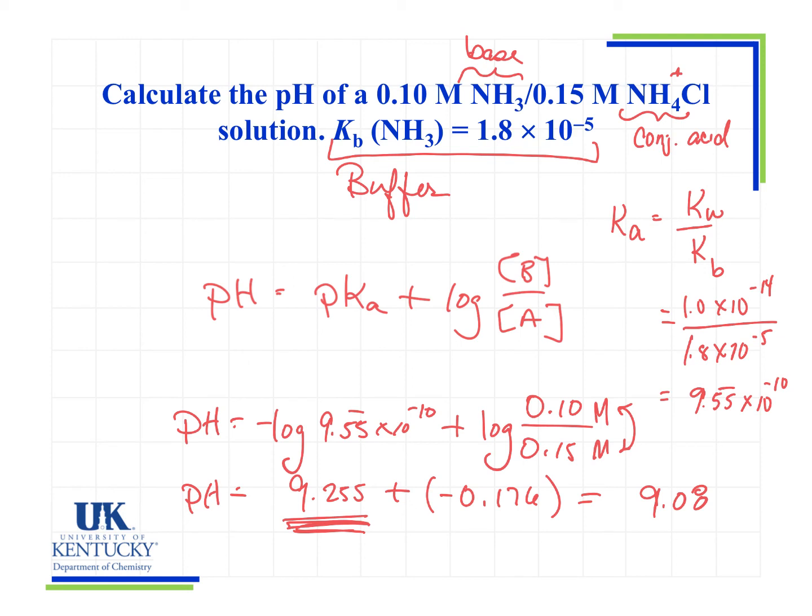Remember, this second term kind of fine tunes it up or down. In this case, it's fine tuning it down, and let's see if that makes sense. Which do we have more of, the base or the acid? We have more of the acid, so we'd expect it to come down a little bit, and so we'd have a pH of 9.08.